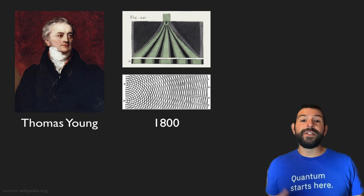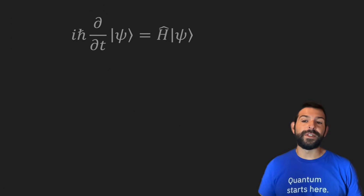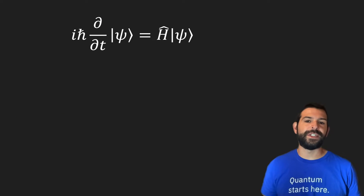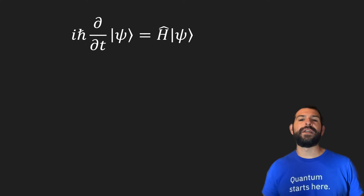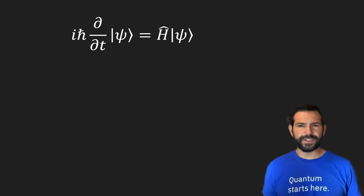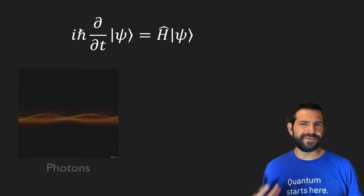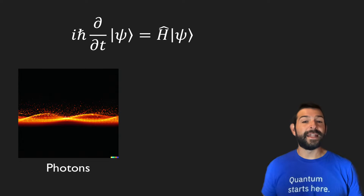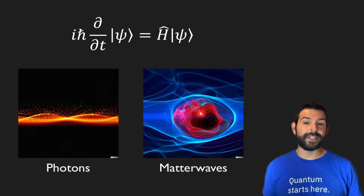In the early 1900s came the discovery of quantum mechanics, which had two major implications for this experiment. First, that light is in fact made out of particles called photons, and that matter particles, like electrons, behave like waves.